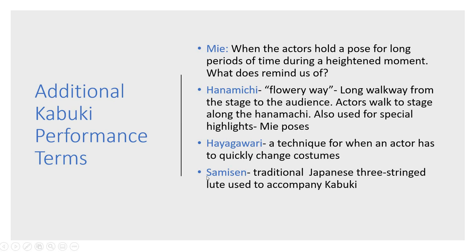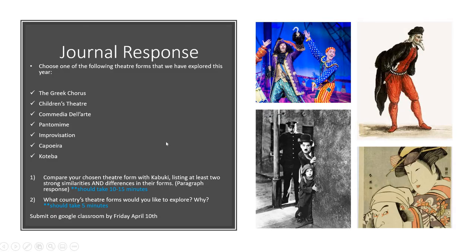The shamisen is a traditional Japanese three-stringed instrument used to accompany kabuki. Originally just the shamisen was used, but as the theater form progressed, several shamisens were used along with other instruments, including a lot of drums.